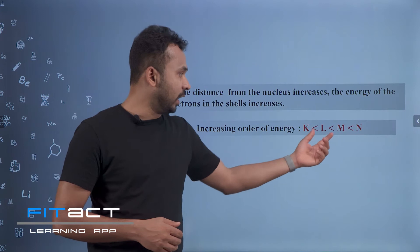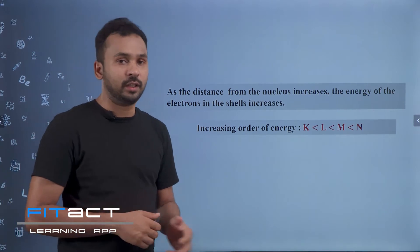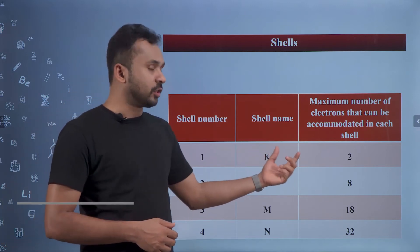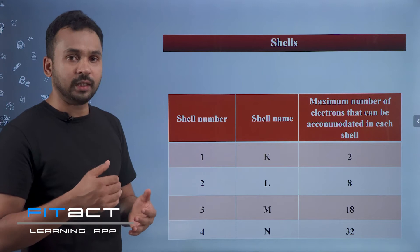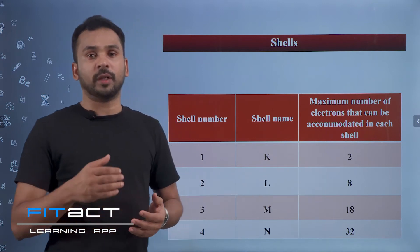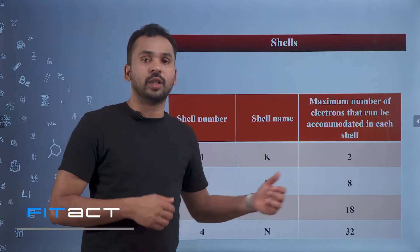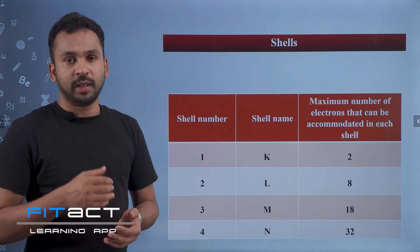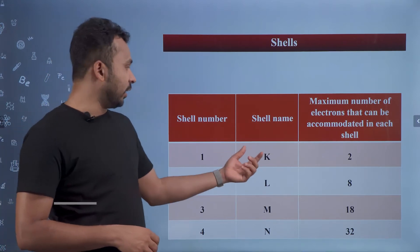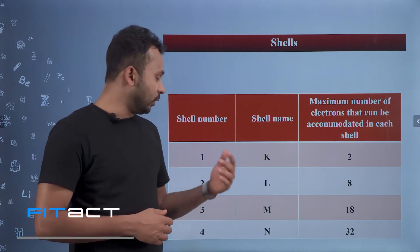The first shell is K-shell; the maximum electrons that can be accommodated in K-shell is 2. The second shell is L-shell; maximum 8 electrons will be accommodated. The third shell is M-shell, with 18 electrons, and N-shell accommodates 32 electrons. Electrons are filled in order of increasing energy: first the K-shell, then L-shell, then M-shell, then N-shell.